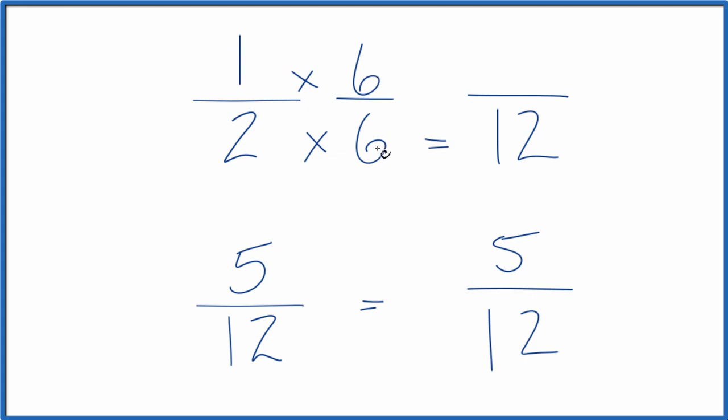That's because 6 divided by 6 is 1, so I'm just multiplying 1 half by 1. It doesn't change the value, just the way it's represented.